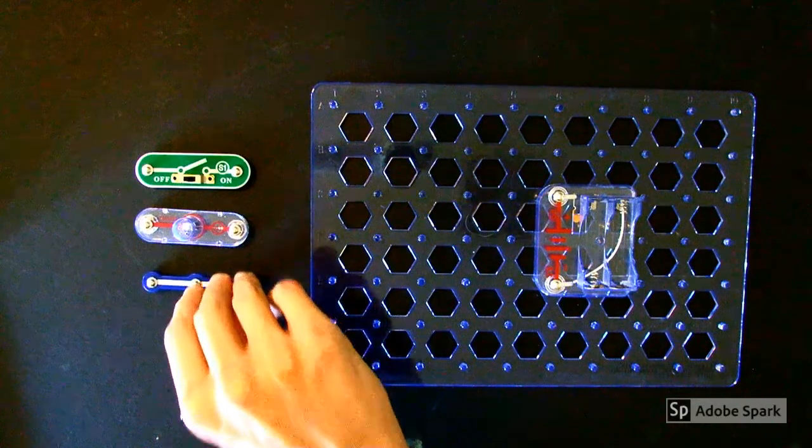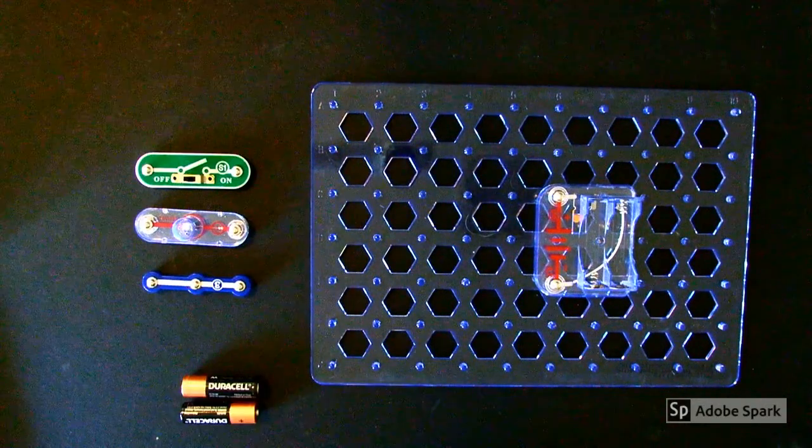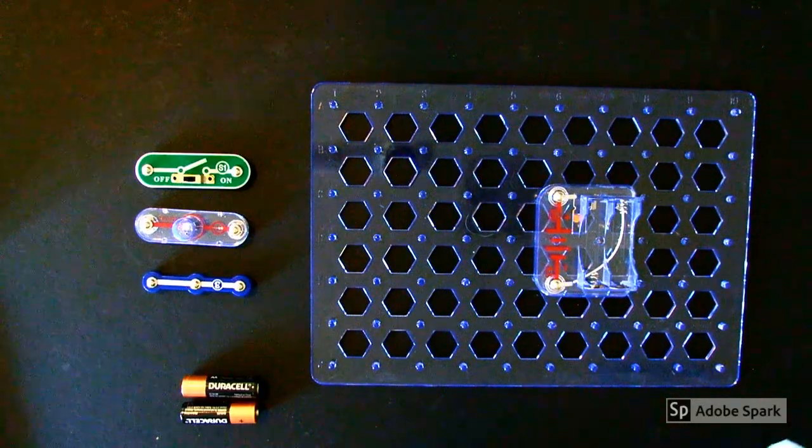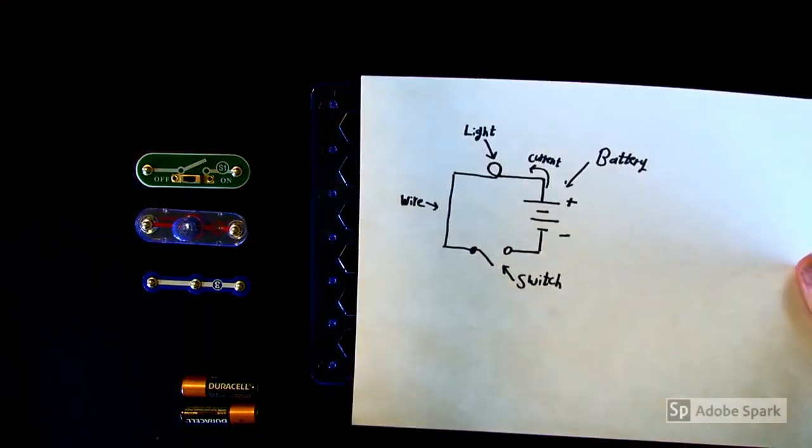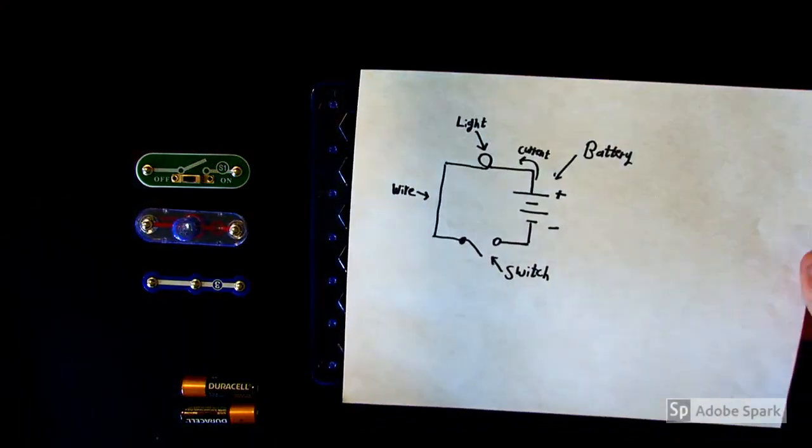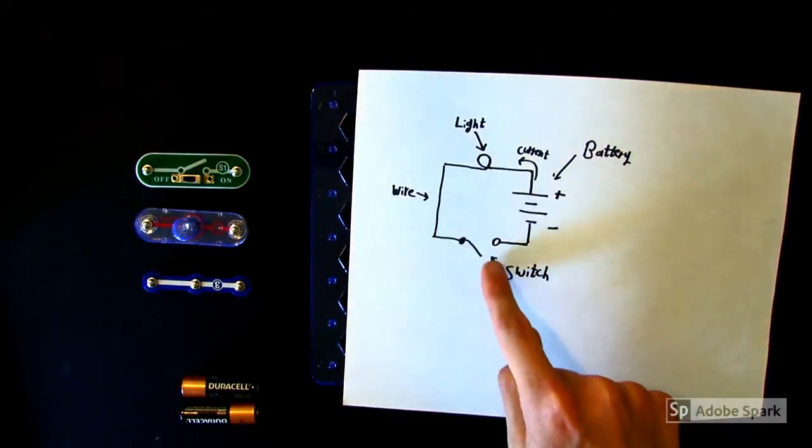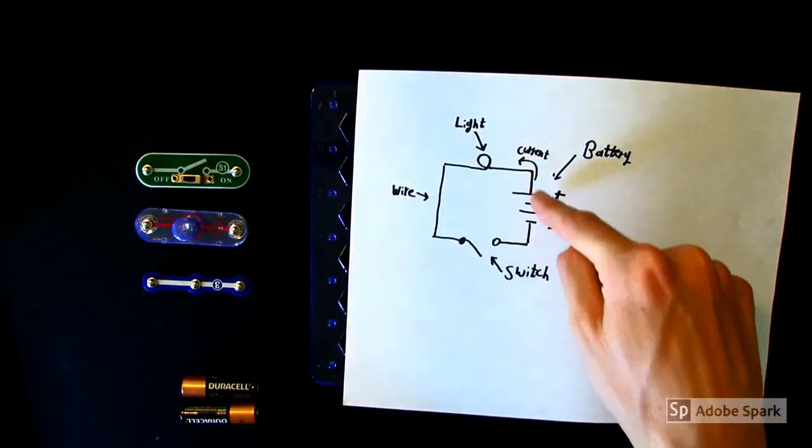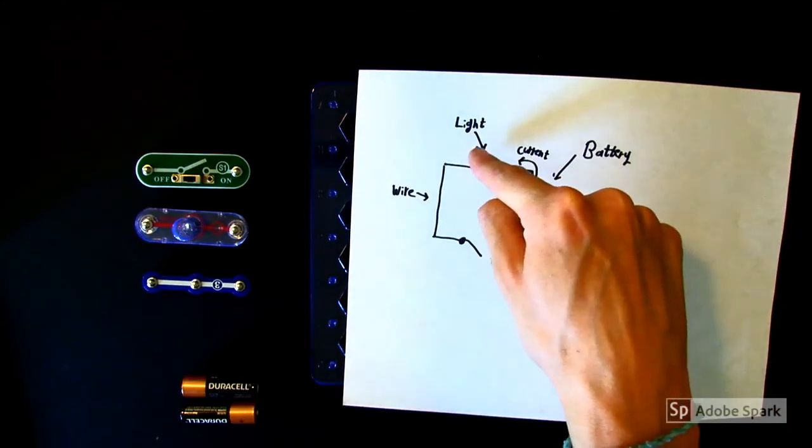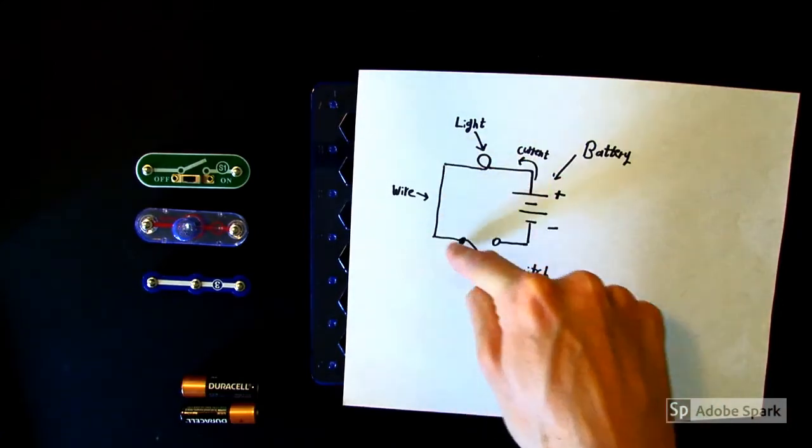Now it is time to create your first circuit. Your first circuit is going to look something like this. You're going to have a battery, a light bulb, a wire, and a switch. The electricity will leave the battery, flow through the light, flow down the wire, and flow through the switch.